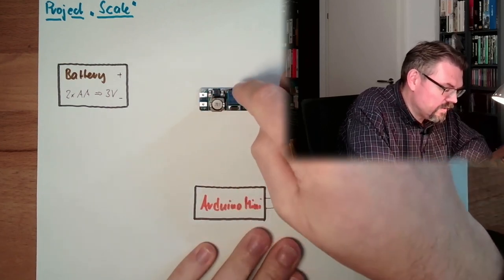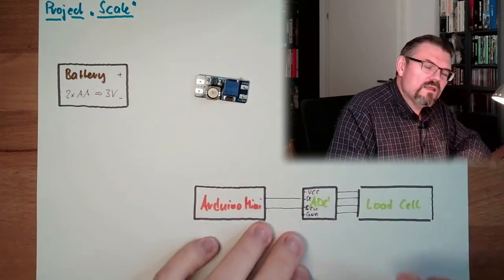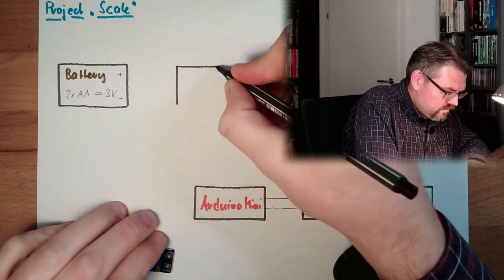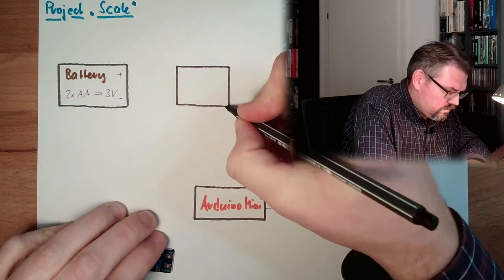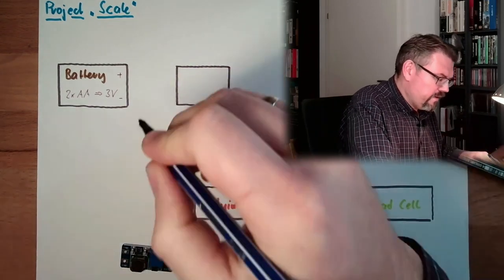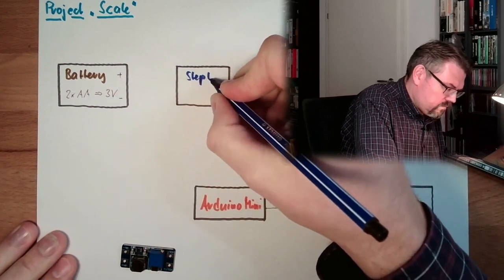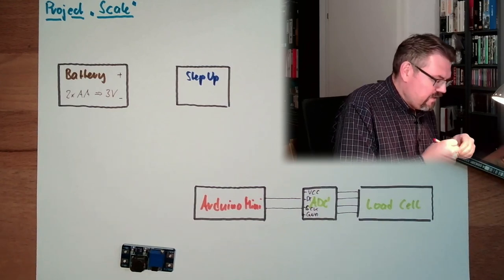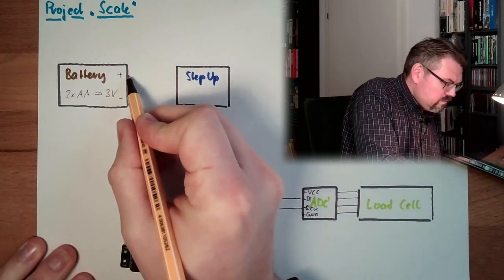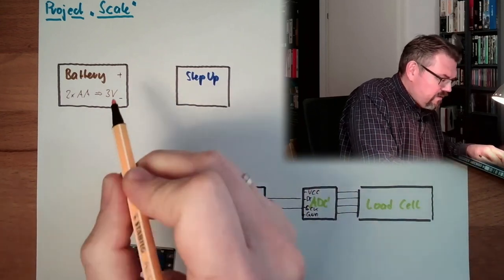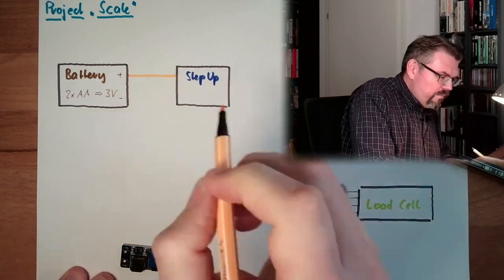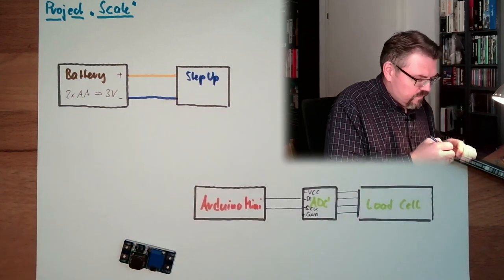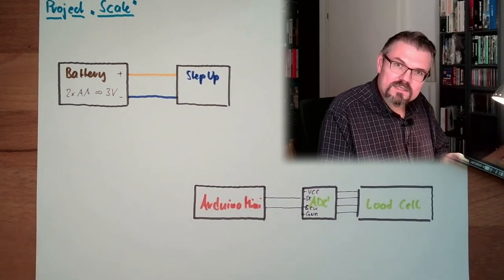So we're going in here, plus and minus, and we will adjust this. And now the question is, to where to adjust this? So we have a step-up converter here. We will put this plus line here. Let's make it an orange plus line. It's only three volts. And also the minus line we will... And here, I'm going to adjust this to 5 volts output.